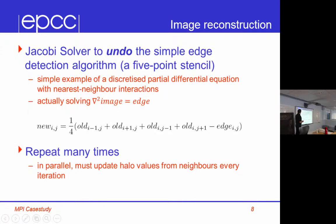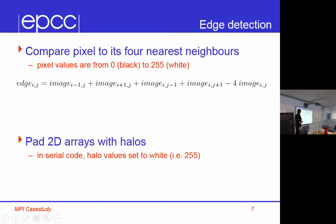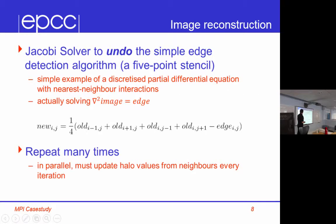So you can convince yourself quite easily that if you get to the answer, then it will stop. Because if you get to the answer, then image left, right, up, down is equal to the edge plus four times the image. So if we get that, this is equal to the edge plus four times the image. Well, that cancels, and that means that the new thing is the image. You can convince yourself that if you reach the solution, you will stay there. It's not obviously that you will get to the solution, but it turns out that you do. But all we do is we just do this many, many times. The new value is some function of the old values minus the edge.